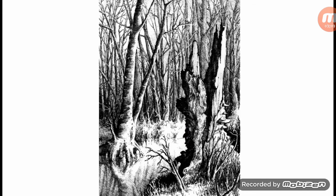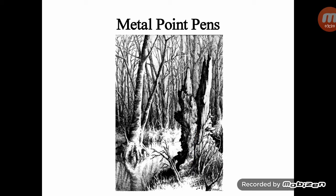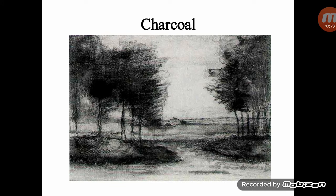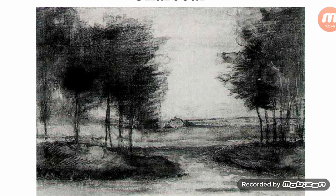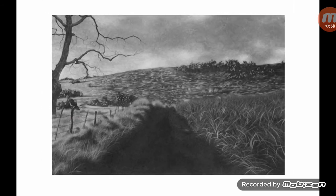You can see examples of metal point landscape drawings here. Moving on to charcoal — charcoal produces dark, soft, and harsh lines. Charcoal sticks are burnt pieces of wood and are used greatly for sketches. Here are examples of landscape drawings in charcoal.